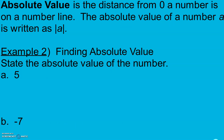Absolute value is the distance from 0 a number is on a number line. The absolute value of a number A is written with two straight bars around it — we call those absolute value bars. That tells us we want just the distance away from 0; we don't care about direction. For example, we might drive to Fargo and drive back — it's about 70 miles both ways. It's not negative 70, right? We're talking distance, so it's the same regardless of which direction.